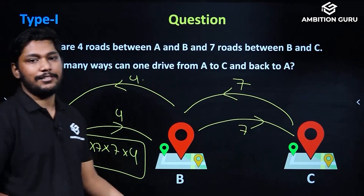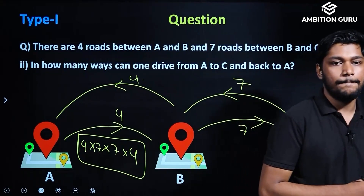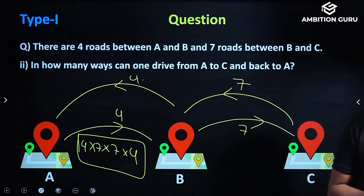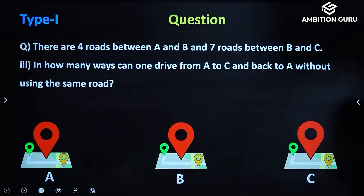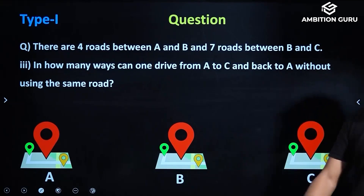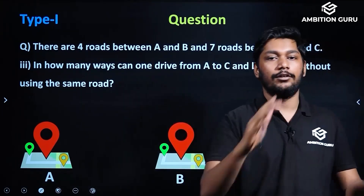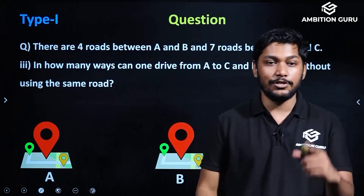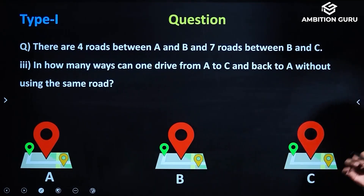You cannot repeat — the road you went by, you cannot return through that same road. Now the last question: In how many ways can one drive from A to C and back to A without using the same road?